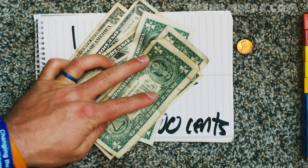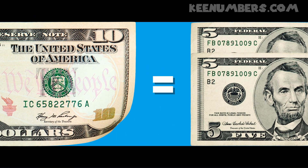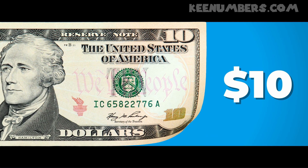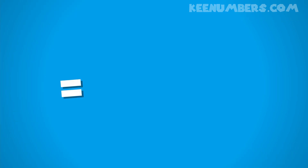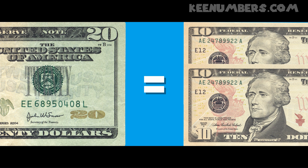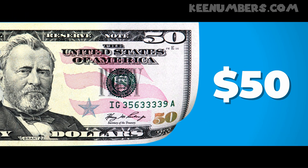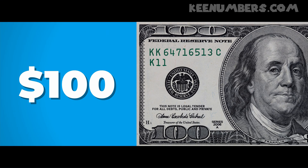Similarly, we have the ten dollar bill — an easier way to carry ten dollars. Ten dollars would be one thousand cents, because ten times one hundred is one thousand cents. Likewise, the twenty dollar bill is a substitute for twenty dollars, and the fifty dollar bill is worth fifty dollars.